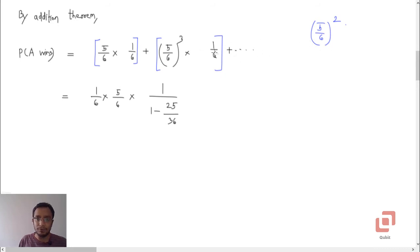Every time you have to multiply the probability by 25 by 36. That is how the system has been designed. So, you can take 1 upon 6 into 5 upon 6 common and then you will get a GP with first term 1 and the common ratio 5 by 6 raised to 2.